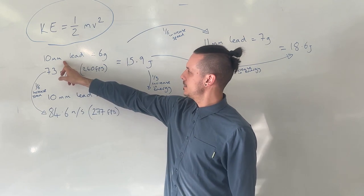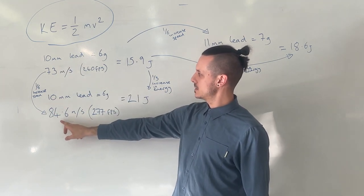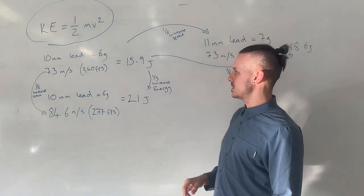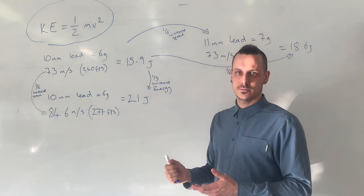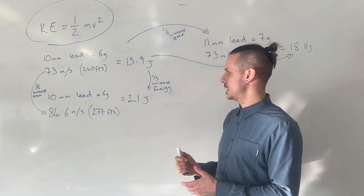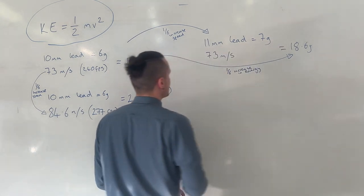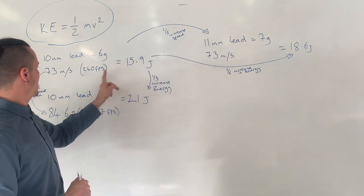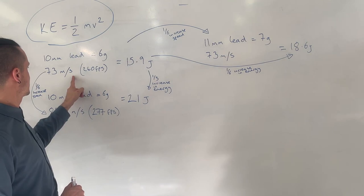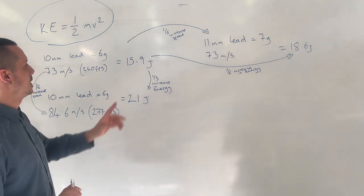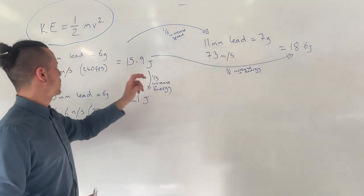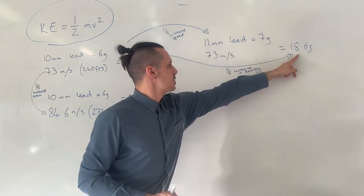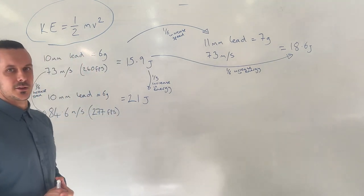If you shoot a 10 millimeter lead twice and increase the speed by a sixth, you're increasing the amount of energy by a third, which is a lot more, twice as much. However, if you take an 11 millimeter lead and shoot it at the same speed as this first calculation, an 11 millimeter that is one sixth heavier than 10 millimeter, there is only a one sixth increase in energy.